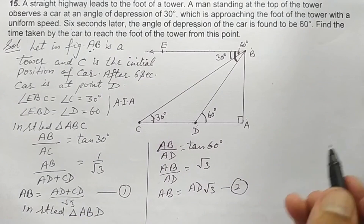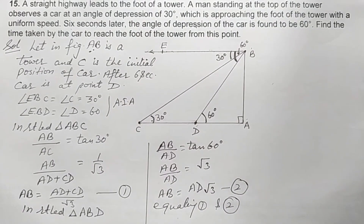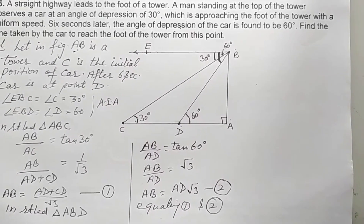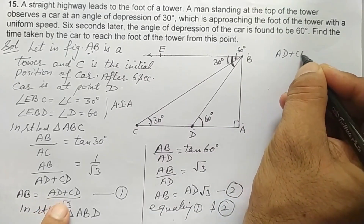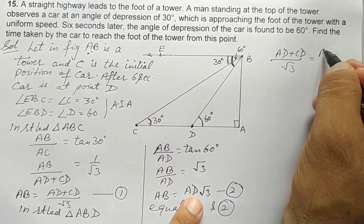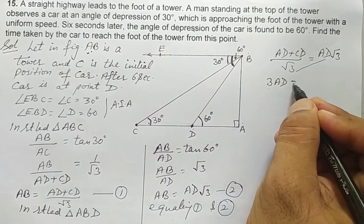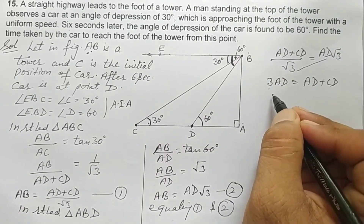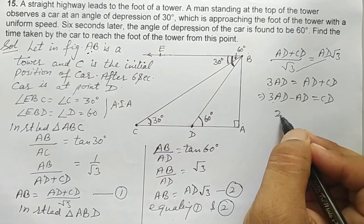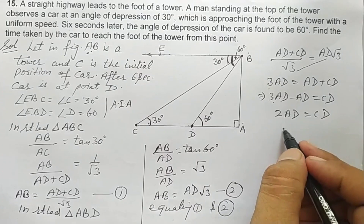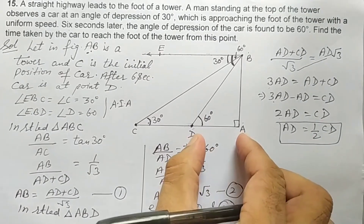Equating Equation 1 and Equation 2: (AD plus CD) over root 3 equals AD times root 3. Cross multiplying, root 3 times root 3 gives 3, so 3 AD equals AD plus CD. Bringing AD to the other side: 3 AD minus AD equals CD, so 2 AD equals CD. Therefore AD equals CD over 2, meaning AD is half of CD.